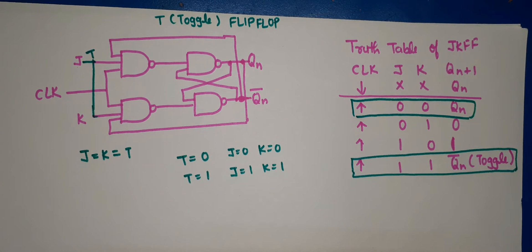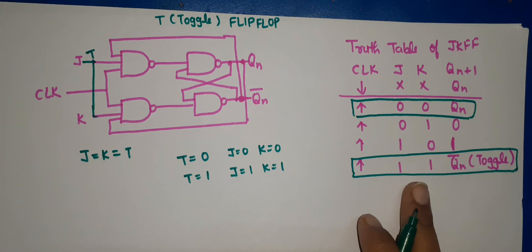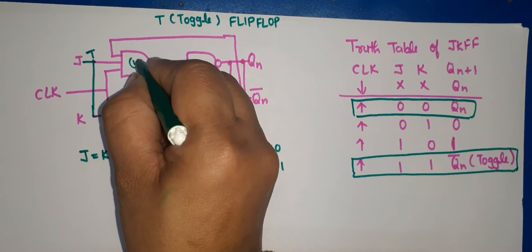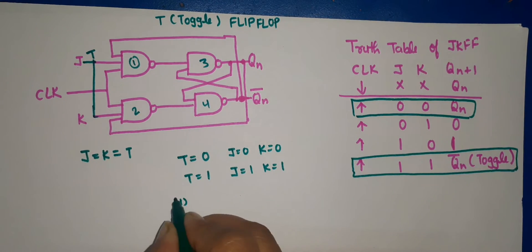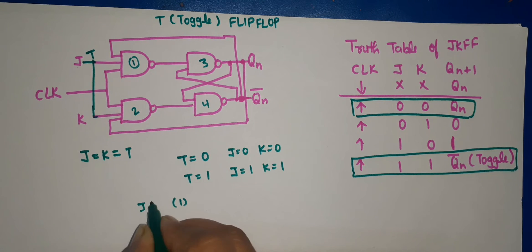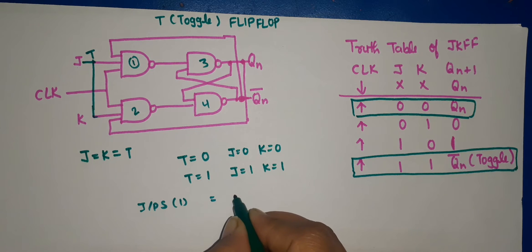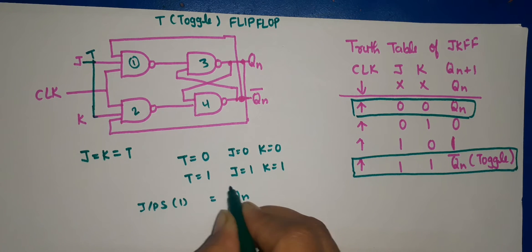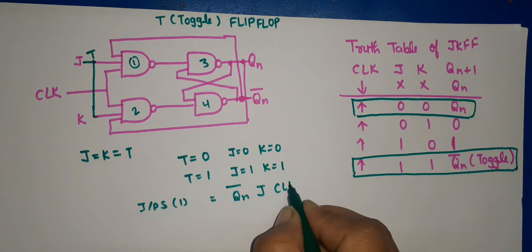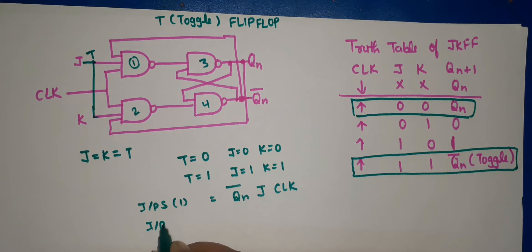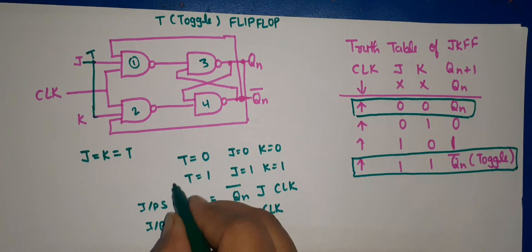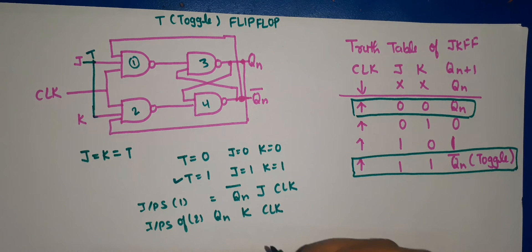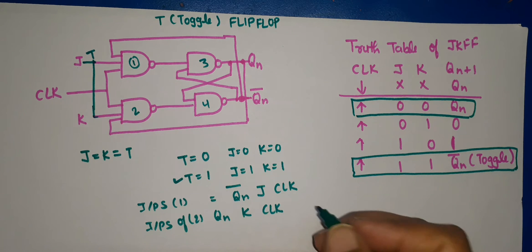Suppose both inputs are 0. Let's label the gates: gate number 1, 2, 3, and 4. For gate number 1, the inputs are QN bar, J, and clock. For gate number 2, the inputs are QN, K, and clock. Now let's take the condition where J and K both have value 1, meaning T is equal to 1, so J and K both will be 1.